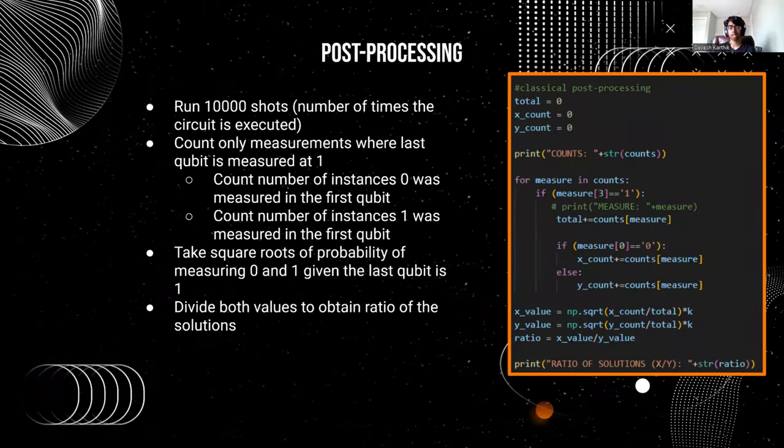Classical post-processing. Most algorithms today are hybrid algorithms, meaning that they're both quantum and classical in nature. For the quantum portion, we run it 10,000 times, or we have 10,000 shots. That means we get 10,000 measurements.